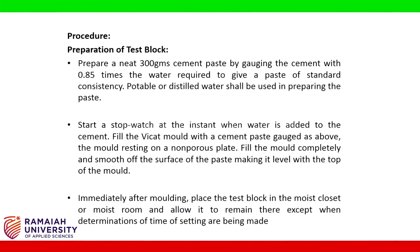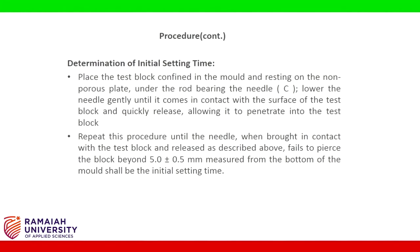Procedure — preparation of test block: Prepare a neat 300-gram cement paste by gauging the cement with 0.85 times the water required to give a paste of standard consistency. Portable or distilled water shall be used. Start a stopwatch at the instant when the water is added to the cement. Fill the Vicat mold with the cement paste, the mold resting on a non-porous plate. Fill the mold completely and smooth off the surface level with the top of the mold. Immediately after molding, place the test block in the moist closet.